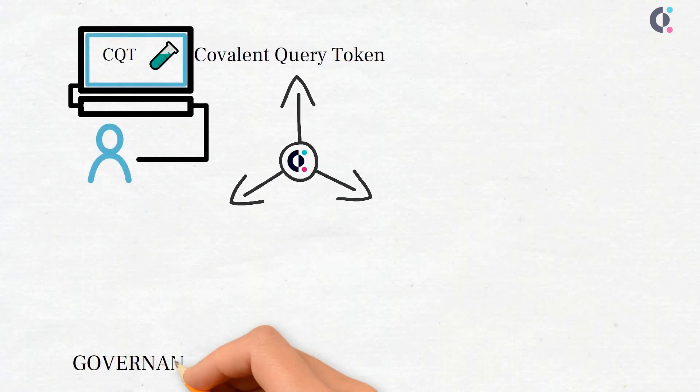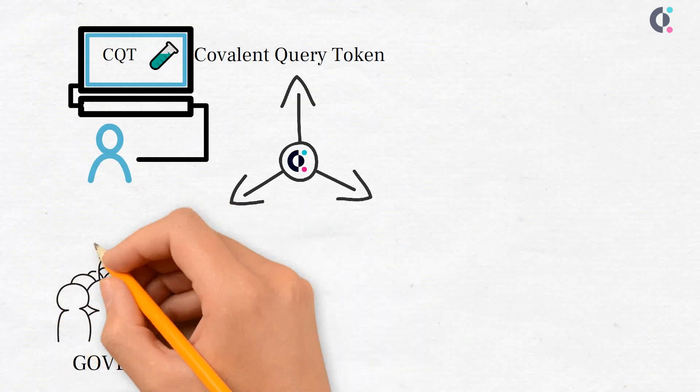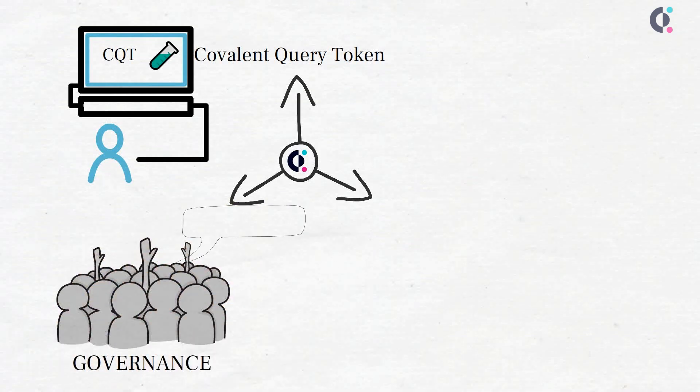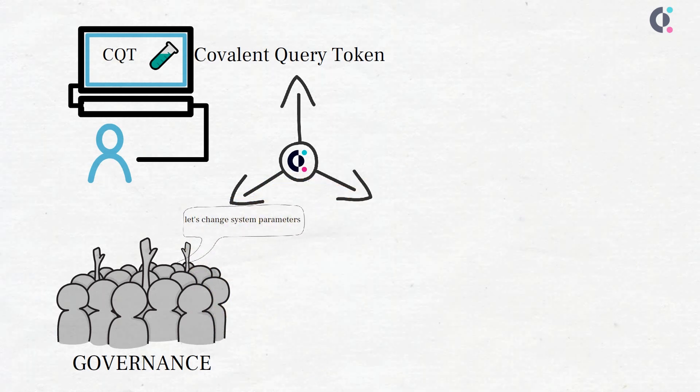Fact number one – governance. Token holders vote on proposals to change system parameters such as new data sources, specific geolocations and data modeling requirements.